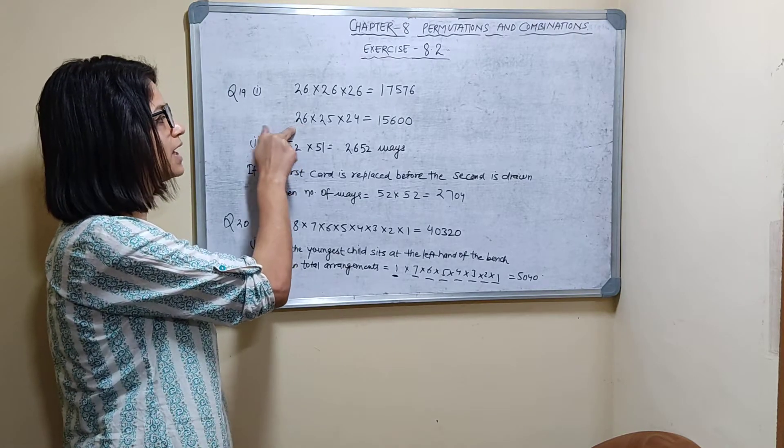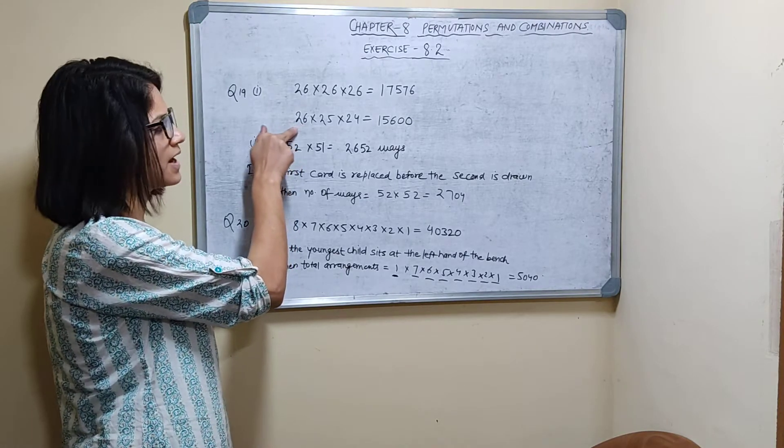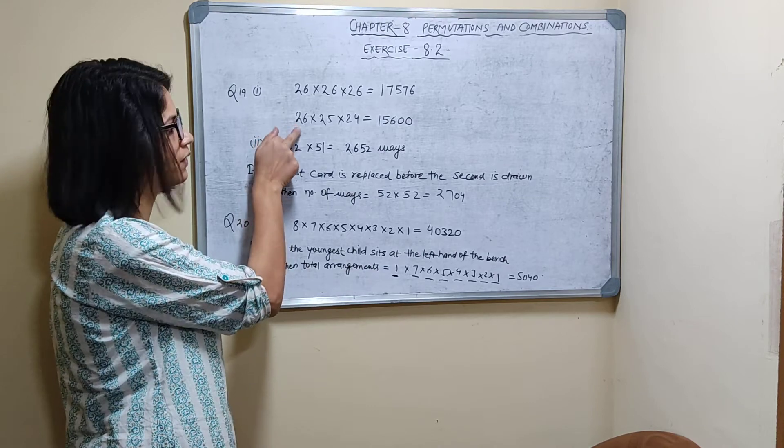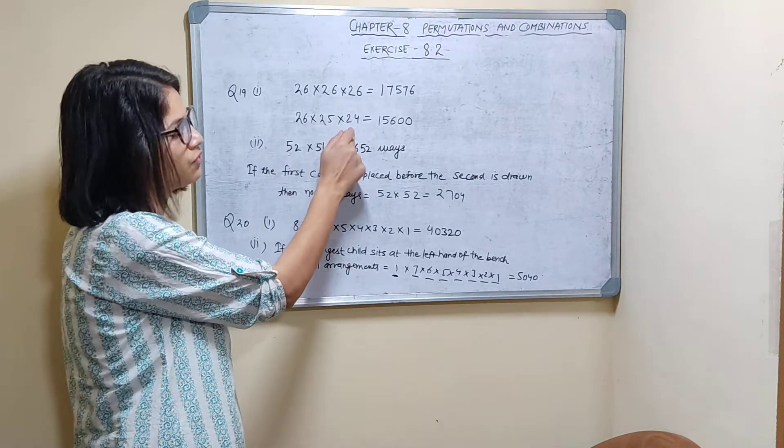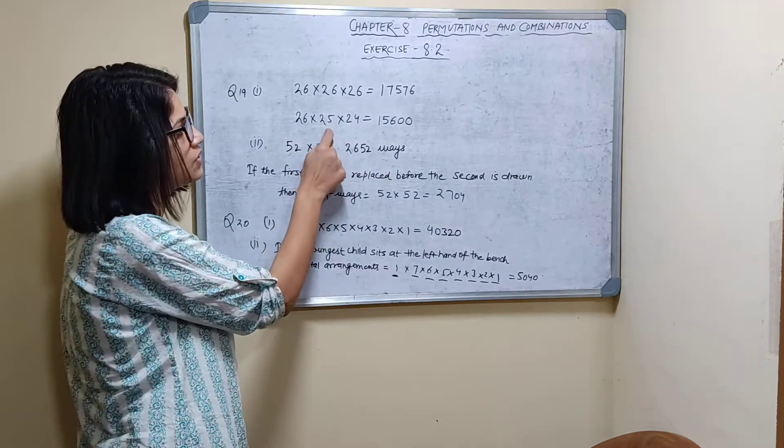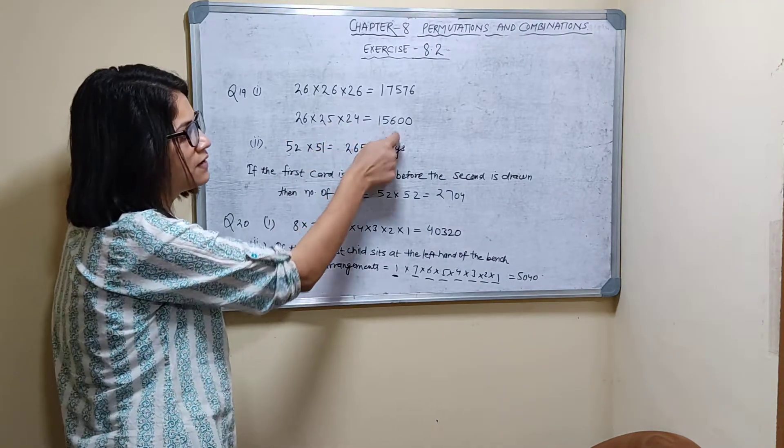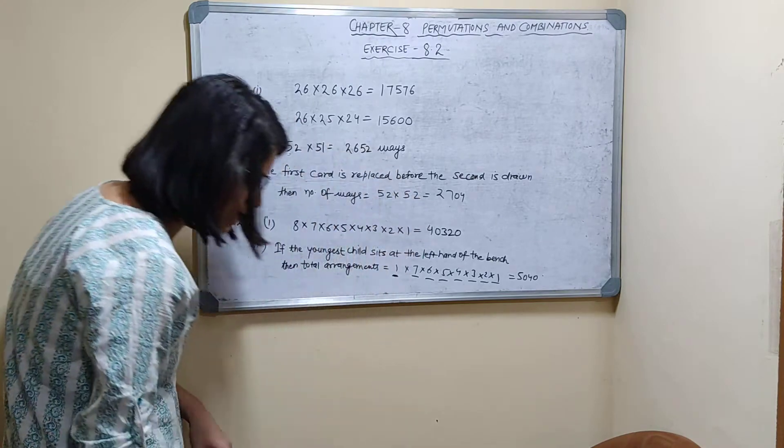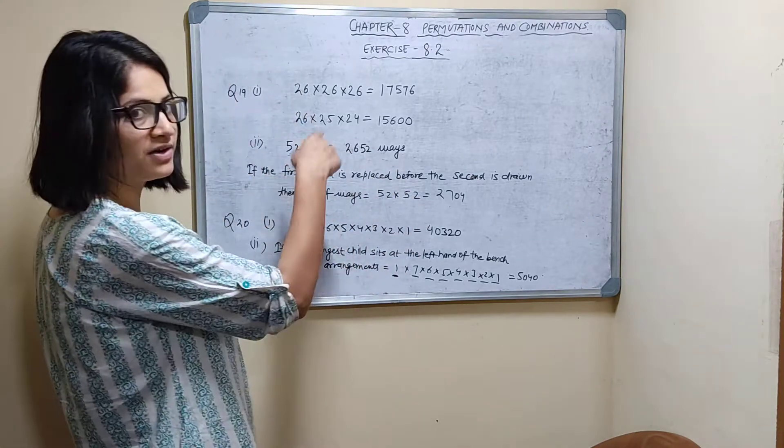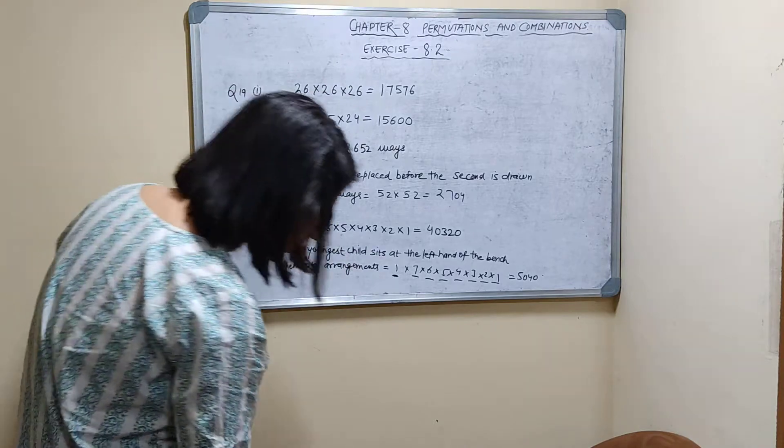Distinct alphabets means if I am taking here any 26 alphabets I can take from any 26 alphabets. So one is used here, so only 25 choices. Then two are used, so only 24 choices are left. So 26 into 25 into 24. So 15,600 words can be formed when all have distinct alphabets.